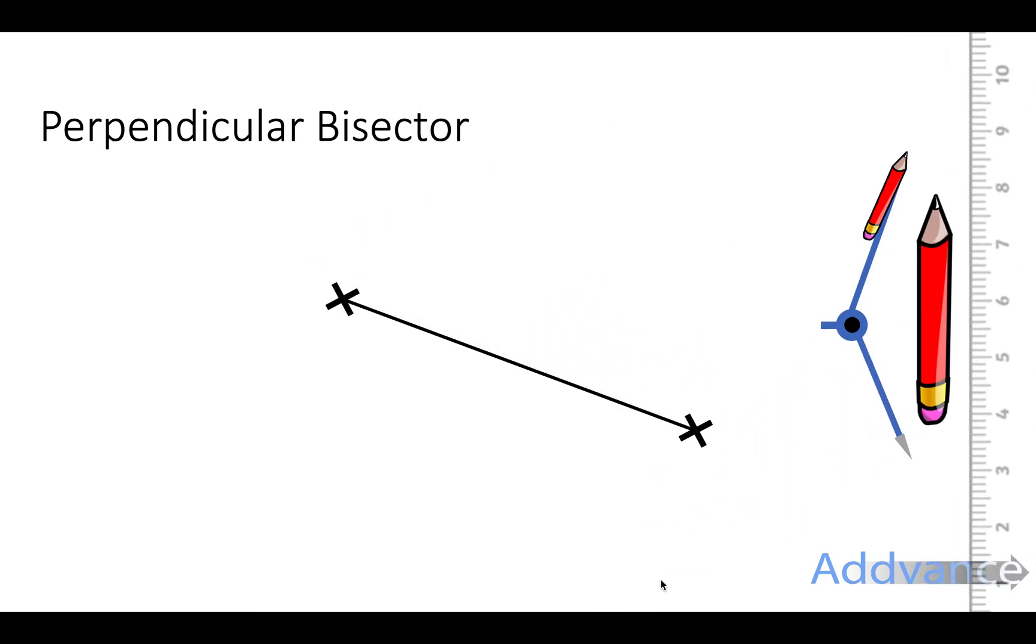Now we're going to take our compass and put the needle on one of the dots and draw an arc like this. We're then going to do the same for the other dot, but when you move the compass from one dot to the other do not change the distance between the needle and the pencil. Keep the gap between the needle and the pencil exactly the same for the second arc like this.